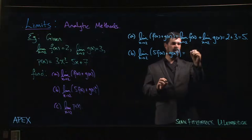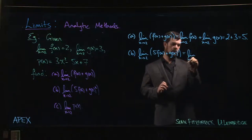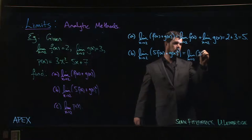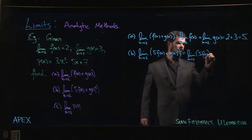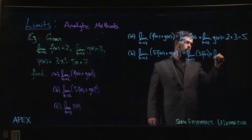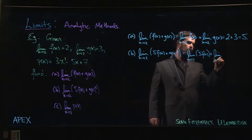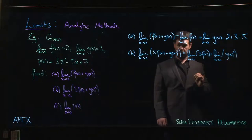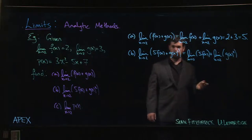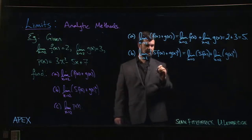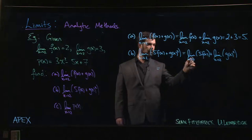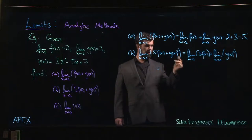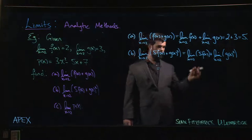Again, the first thing we're going to do is apply the sum rule, so it's going to be the limit as x goes to 2 of 5f(x) plus the limit as x goes to 2 of g(x) squared.